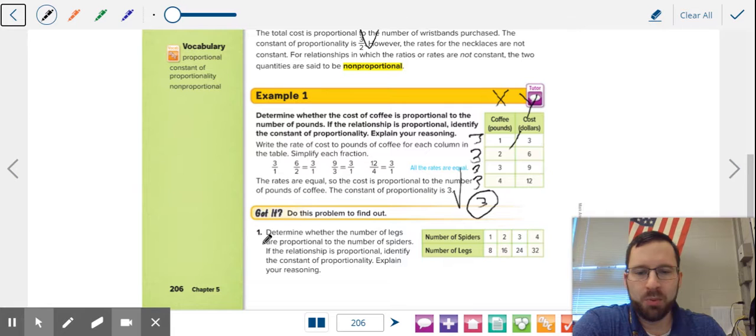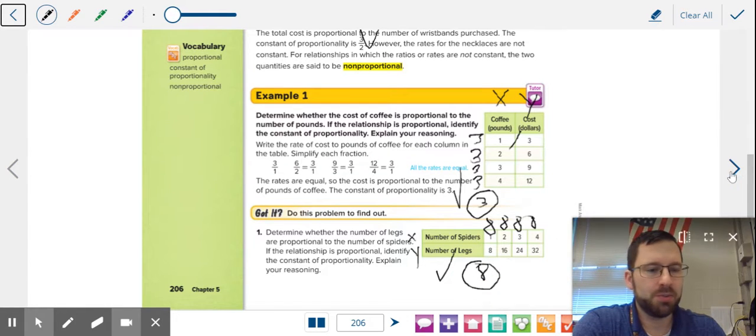So let's determine, number 1, are the number of legs a spider has proportional to the number of spiders. This is the x, the number of spiders. Is it proportional to the number of legs? 8 divided by 1 is 8, 16 divided by 2 is 8, 24 divided by 3 is 8, and 32 divided by 4 is 8. So yes, this is a proportion, and the constant of proportionality is 8.